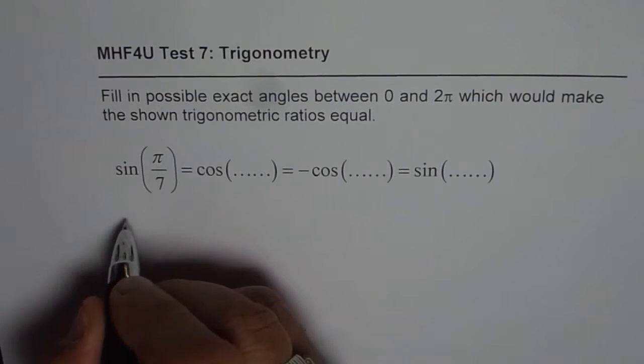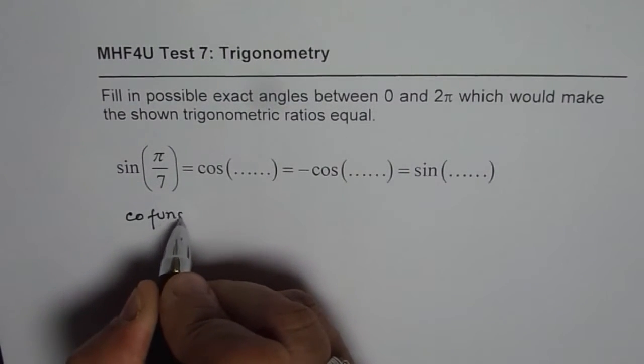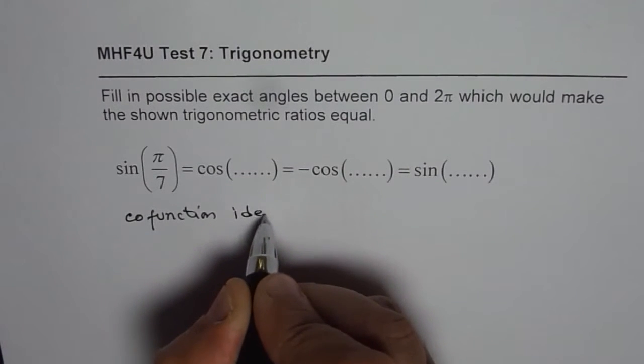So these are co-function identities, right? These are co-function identities.